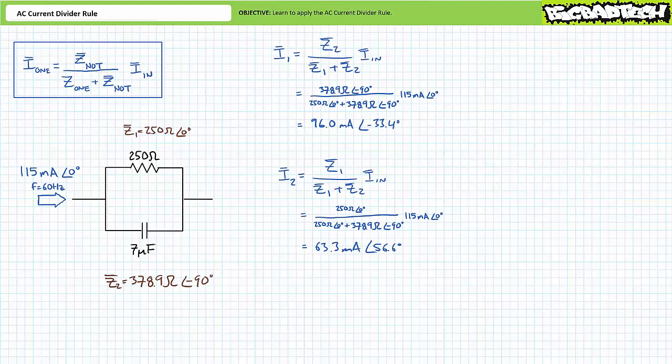Given we save so much time using the AC current divider rule, we've got ample opportunities to check our work. There are two principal means of doing so: one via Kirchhoff's current law and the other via Ohm's law.